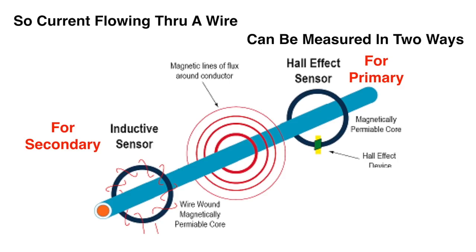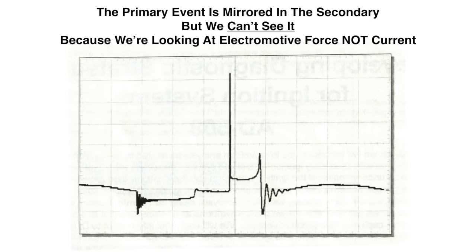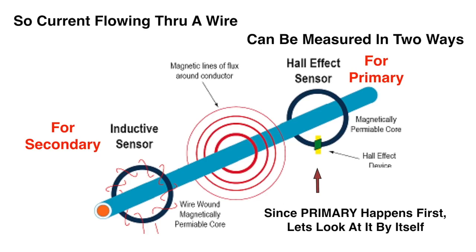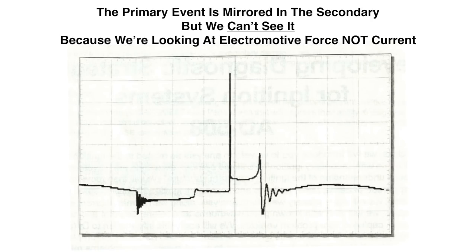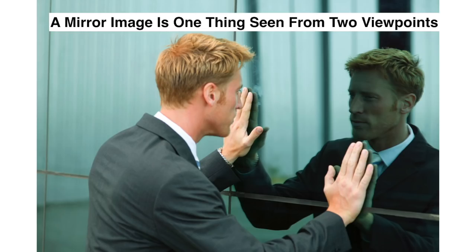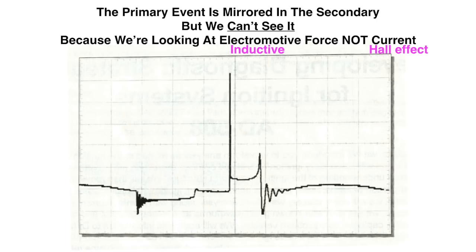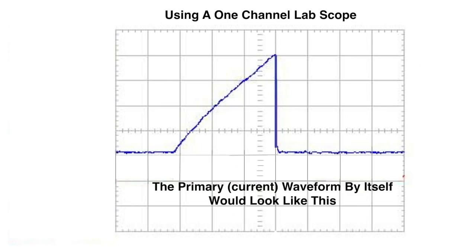Since primary happens first, let's look at it by itself. The primary event is mirrored in the secondary, but we can't see it because we're looking at electromotive force, not current — a mirror image is one thing seen from two viewpoints. So the primary event is mirrored in the secondary. We can't see it because of the inductive and Hall effect — they're both different methods.